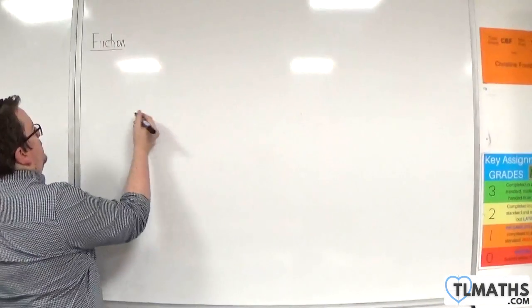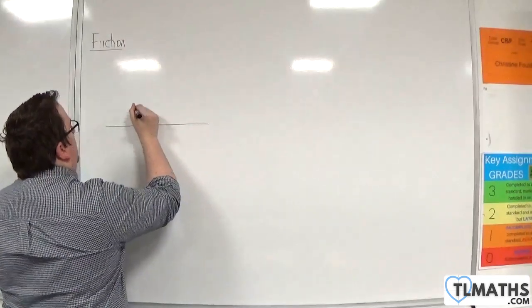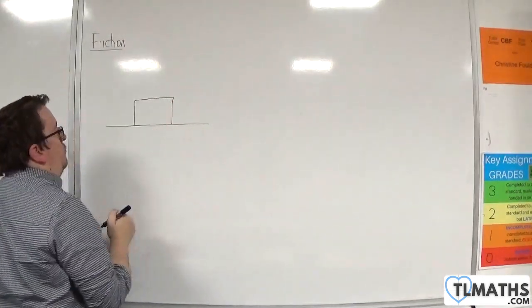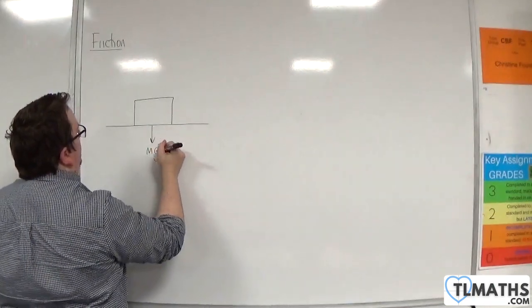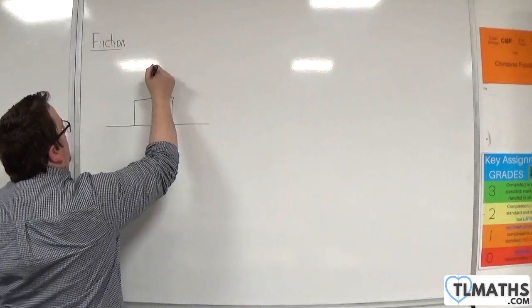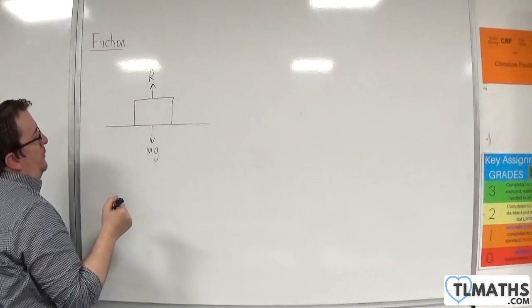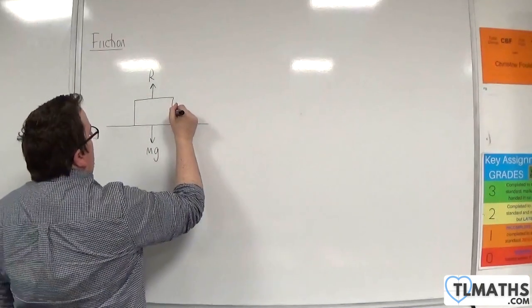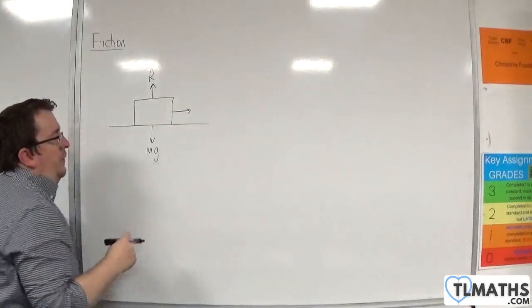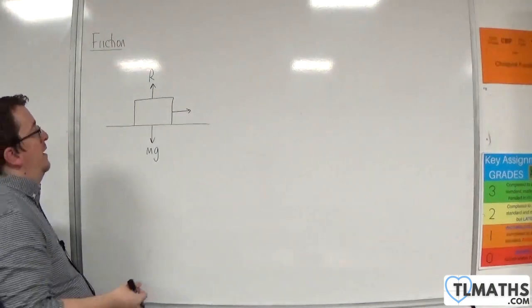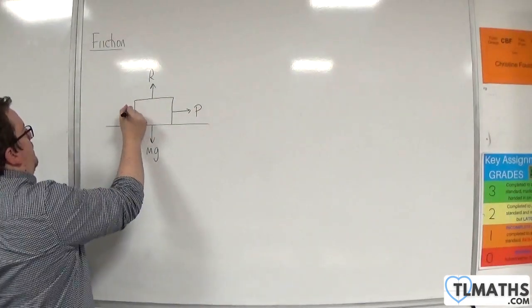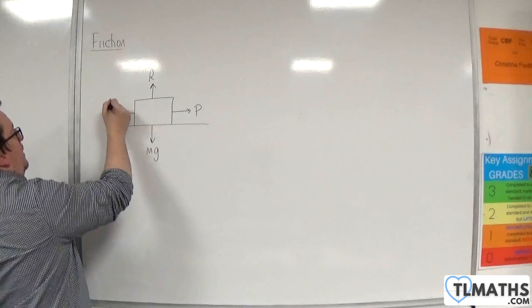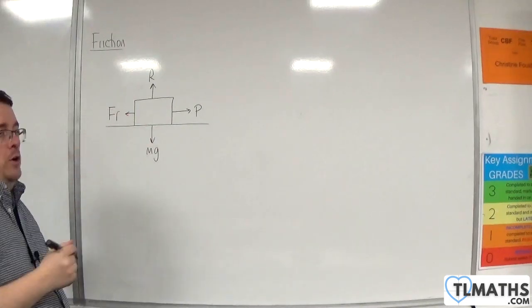First of all, if you've got a particle on a horizontal rough ground, then you're going to have the weight working vertically downwards. It's in contact with the surface, so there'll be a normal reaction force. There is likely to be some kind of force either pulling it along or pushing it along, so I'll call that P. And if that is the direction of motion, then friction must go against that direction of motion.